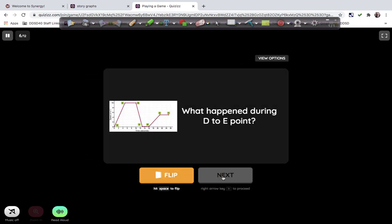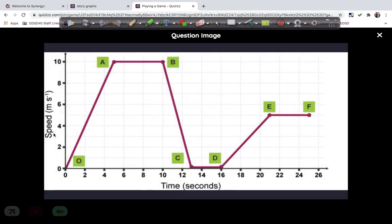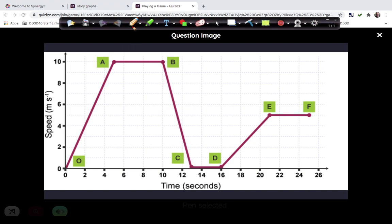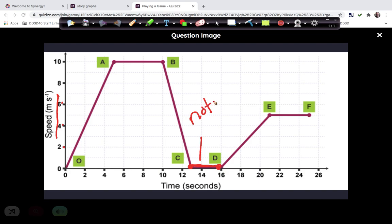What happened during D to E? So let's look at D to E, and this is, we have to first pay attention to what this is. This is speed. Speed right here. So this is meters per second, two meters per second, four meters per second, six, so on. From C to D was zero meters per second. So this is not moving at all. So that is not moving.